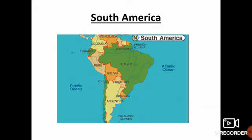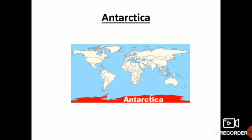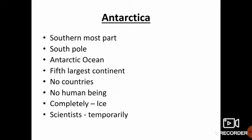This is the map of South America. Next we are going to see about Antarctica. Antarctica is the southernmost part of the earth. It encircles the South Pole and is surrounded by the Antarctic Ocean. Antarctica is the fifth largest continent and the only continent where there are no countries.